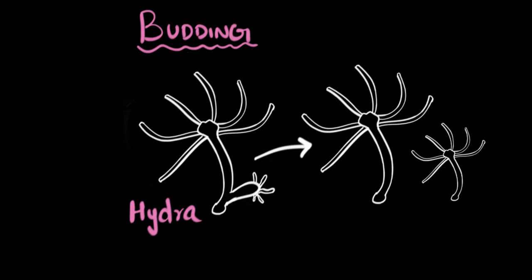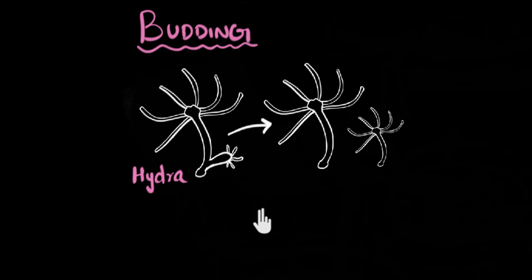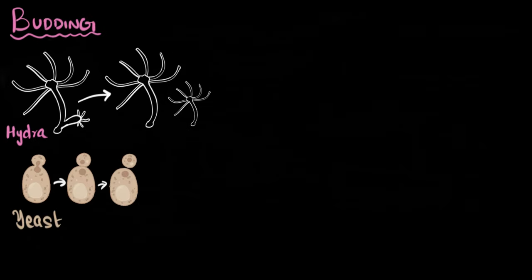Anyways, some unicellular organisms can also undergo budding. Let me show you that. So if you take the example of yeast, then you see yeast also when it matures and it's ready to reproduce, it grows a small bud and then that bud separates out and you get a new individual.